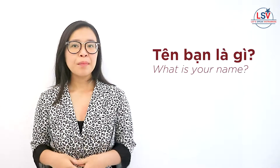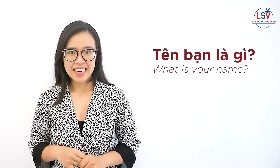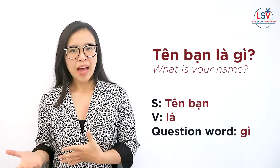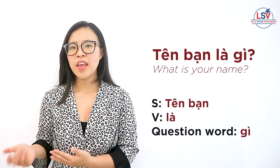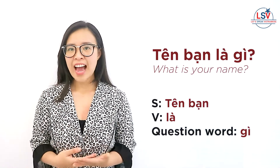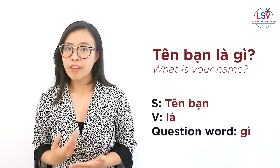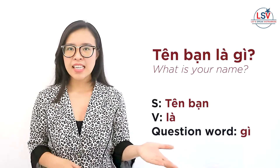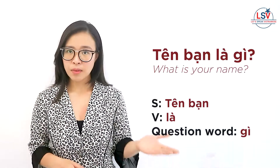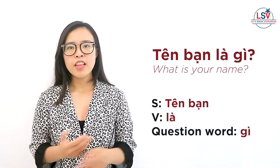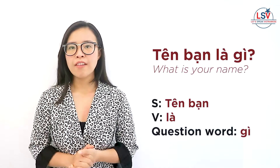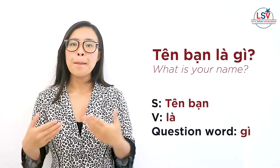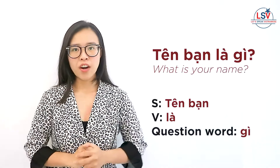Let's look at this example: tên bạn là gì? Here, tên bạn is the subject, meaning 'your name,' and là acts as the verb meaning 'is.' Gì is the question word. In this question there's no object, so we just have subject plus verb plus question word.